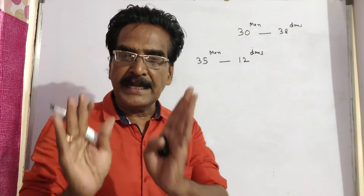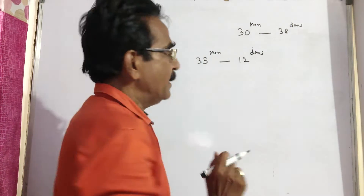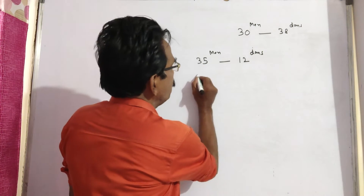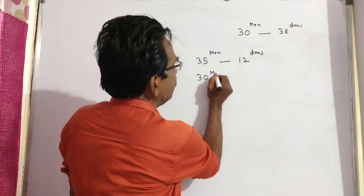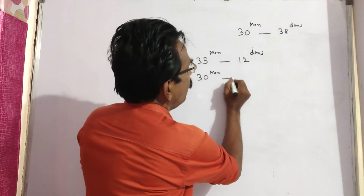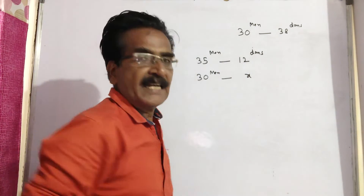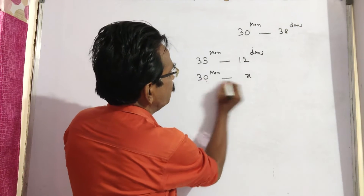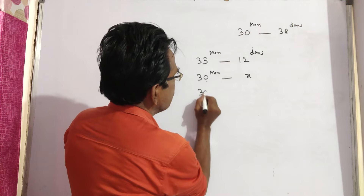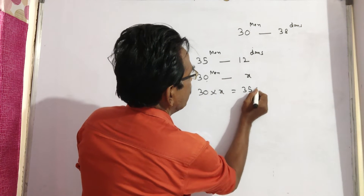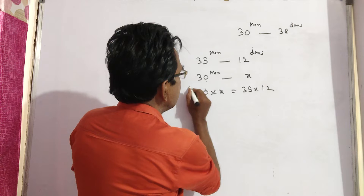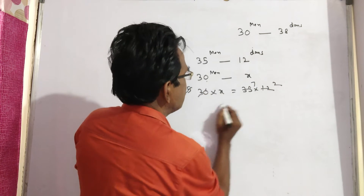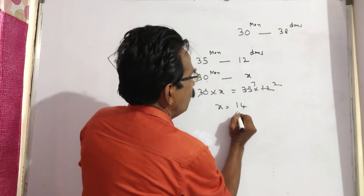After 25 days, it took only 12 more days. So if he had not appointed the additional men and only 30 men were there, we apply: this into this equals this into this. That is, 30 into x is equal to 35 into 12. So x is equal to 14 days.